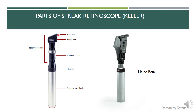Looking at the head part, there are two portions. One is called the brow rest — the part you touch just above the eyebrow to stabilize the instrument. You can also see the peephole, the small hole through which you look in to capture the light trace that is reflected from the patient's retina. These are the basic parts of the retinoscope.